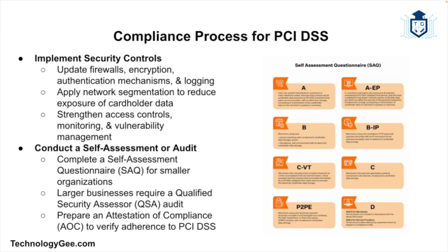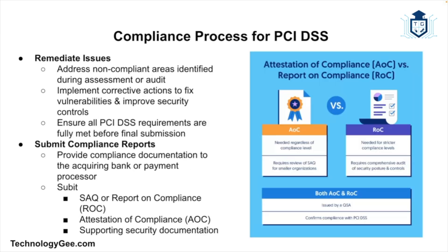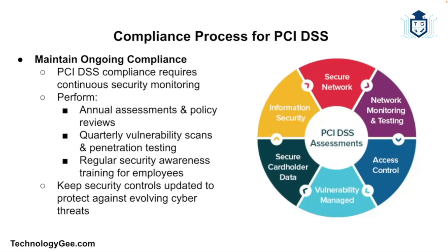Implementing controls may involve updating systems, configuring firewalls, encrypting data, and enhancing access controls. Depending on your organization's size and transaction volume, you may need to conduct a self-assessment or undergo an external audit by a Qualified Security Assessor. A self-assessment involves completing a Self-Assessment Questionnaire and an Attestation of Compliance. You must then address any issues or non-compliant areas identified during the assessment and submit compliance documentation — including the SAQ, Report on Compliance, AOC, and supporting documentation — to your acquiring bank or payment processor.